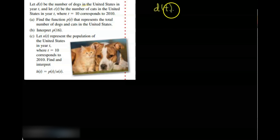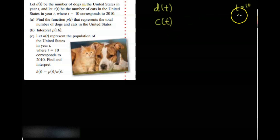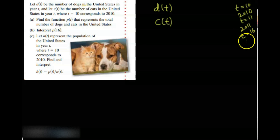Similarly, let d of t be the number of dogs in the United States in year t, and c of t be the number of cats in the United States in year t. These are two functions d of t and c of t, where t equal to 10 means 2010, t equal to 11 means 2011, and t equal to 16 means 2016.